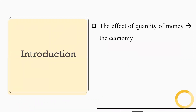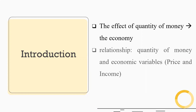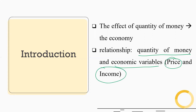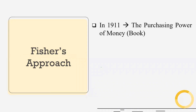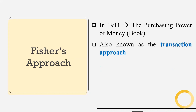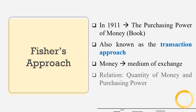The Quantity Theory of Money is helpful to know the effect of quantity of money on the economy. We are interested to know the relationship between quantity of money and other economic variables such as price and income. Fisher, in his book The Purchasing Power of Money, propounded the idea of Quantity Theory of Money, which is also known as the transaction approach, because Fisher assumes that money works as a medium of exchange only. We are interested to know the effect of quantity of money on purchasing power or general price level — that is the idea of Fisher's approach.